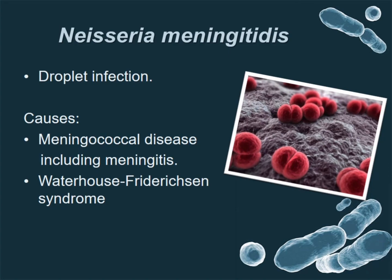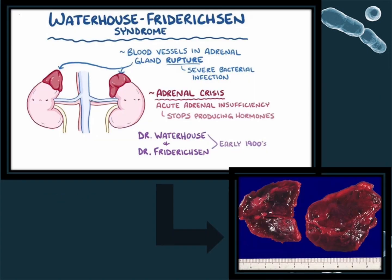The next one is Neisseria meningitidis, a bacteria transmitted through droplet infection. This species is responsible for meningococcal disease such as meningitis, and a very rare disease known as Waterhouse-Frederickson syndrome — a condition where the blood vessels of the adrenal gland break down and stop producing the hormones that the gland was supposed to.